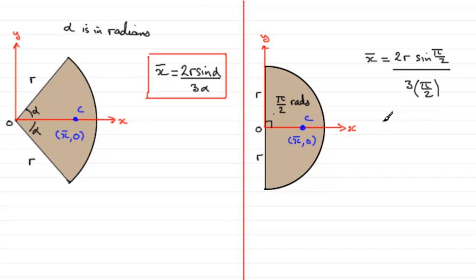Now you should know that the sine of pi upon 2 radians, the equivalent of sine of 90 degrees, is 1. So we end up with 2r all divided by 3 pi over 2.